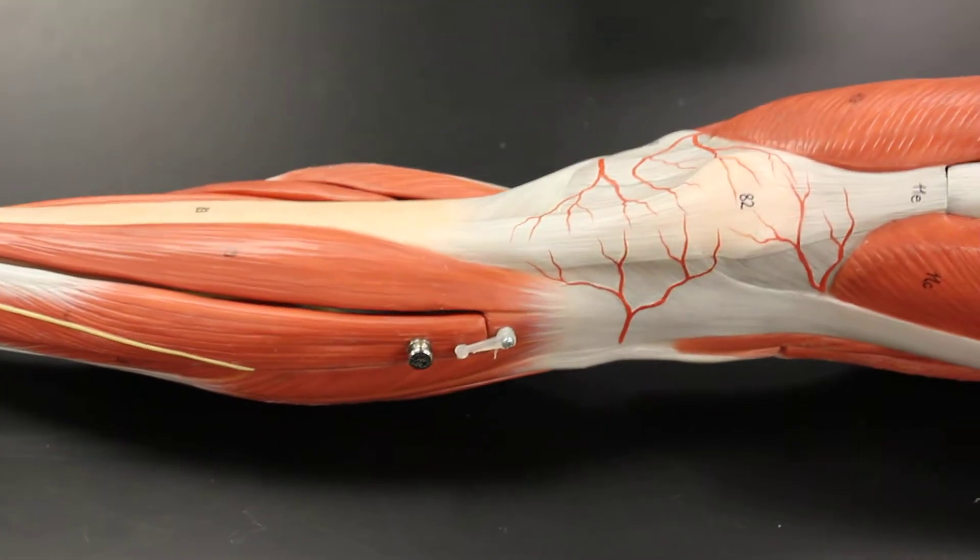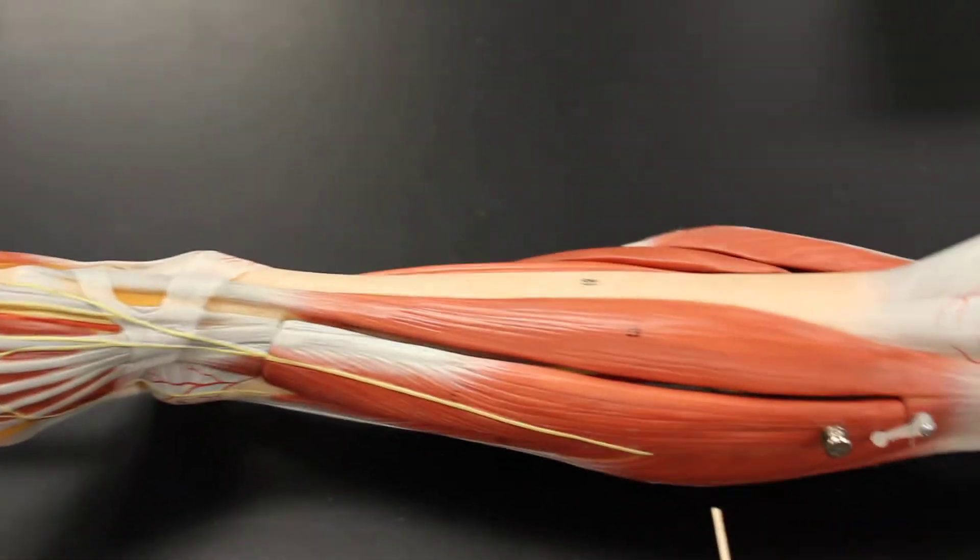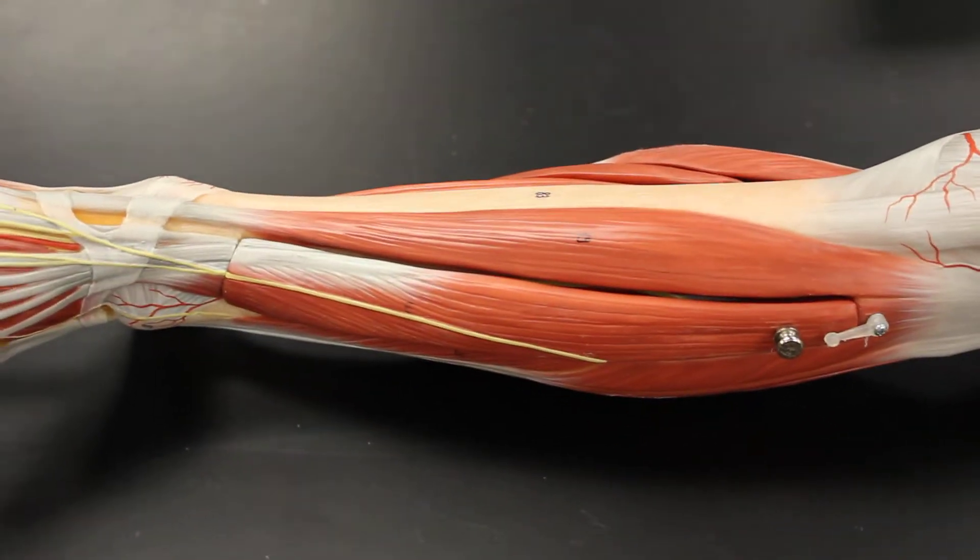Let's get orientated here. Up here is the knee, and then down here is the ankle. And so when we talk about the anterior compartment of the leg, as I said, there's only three muscles.